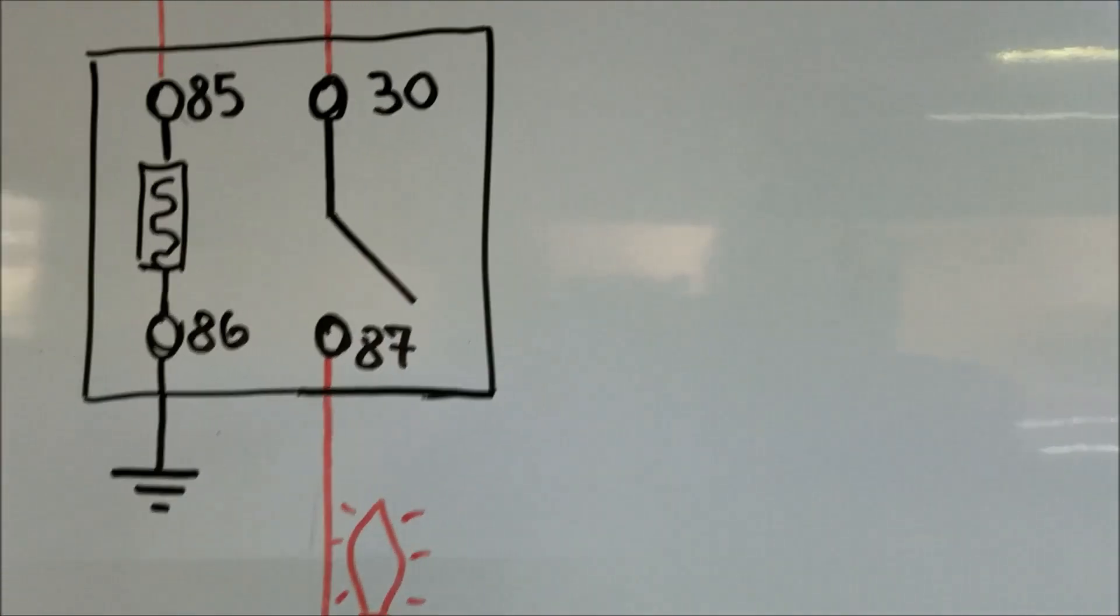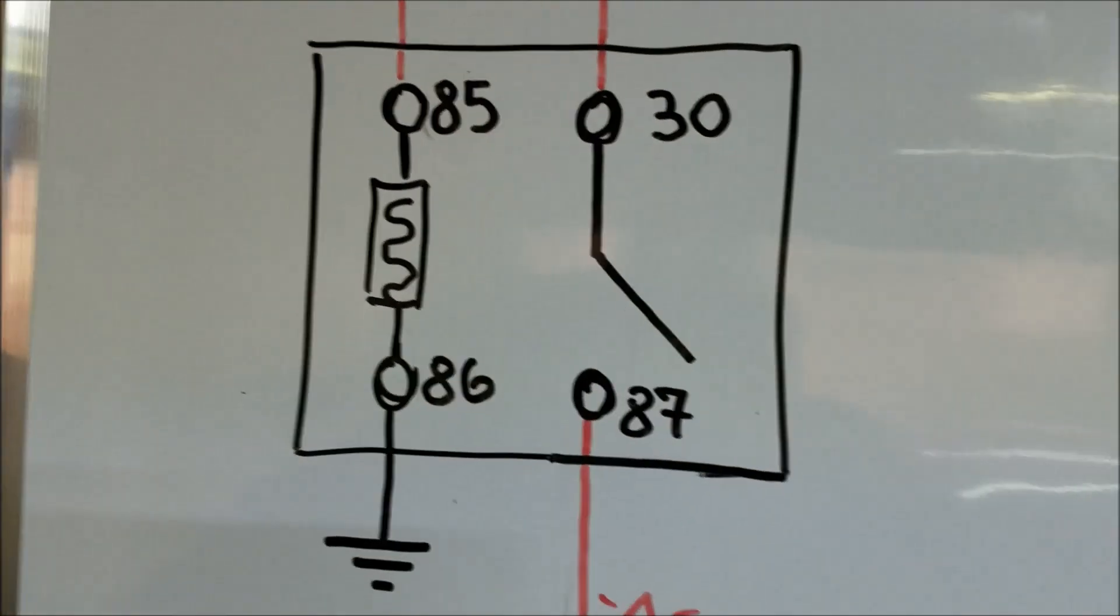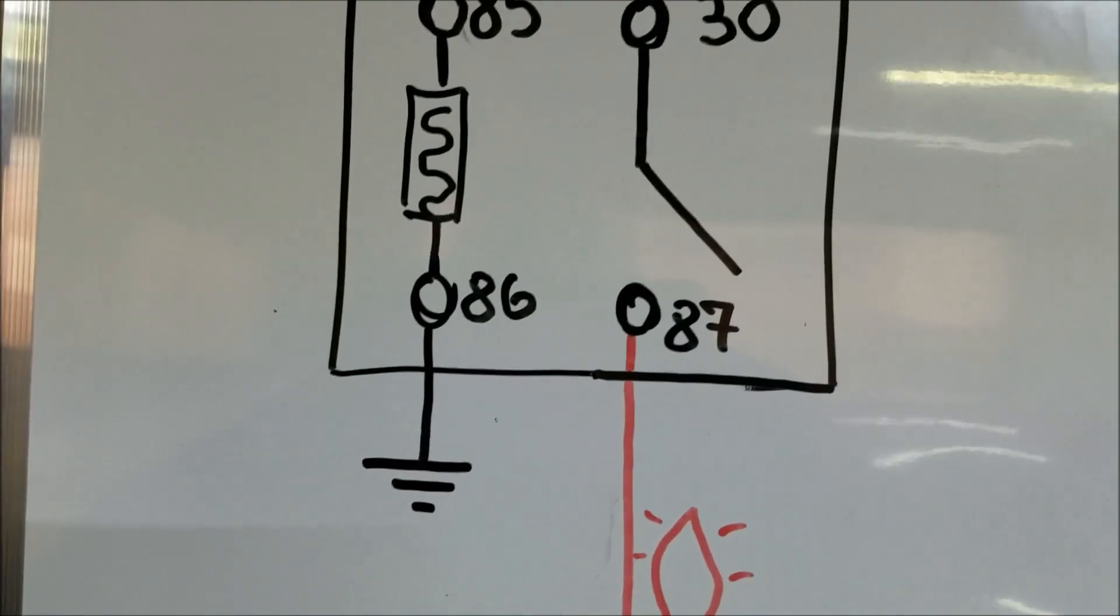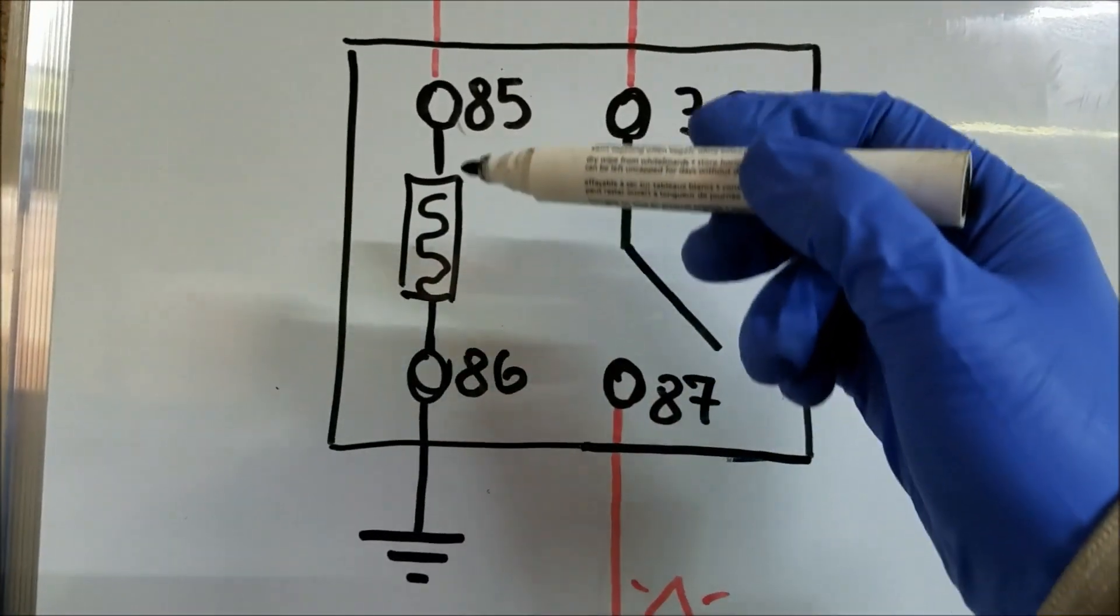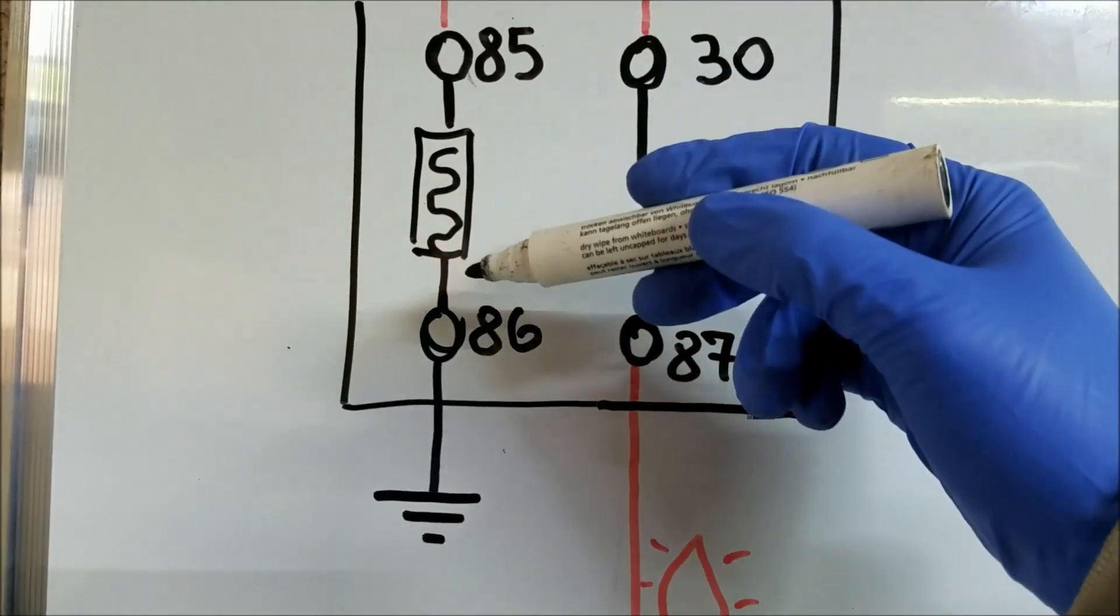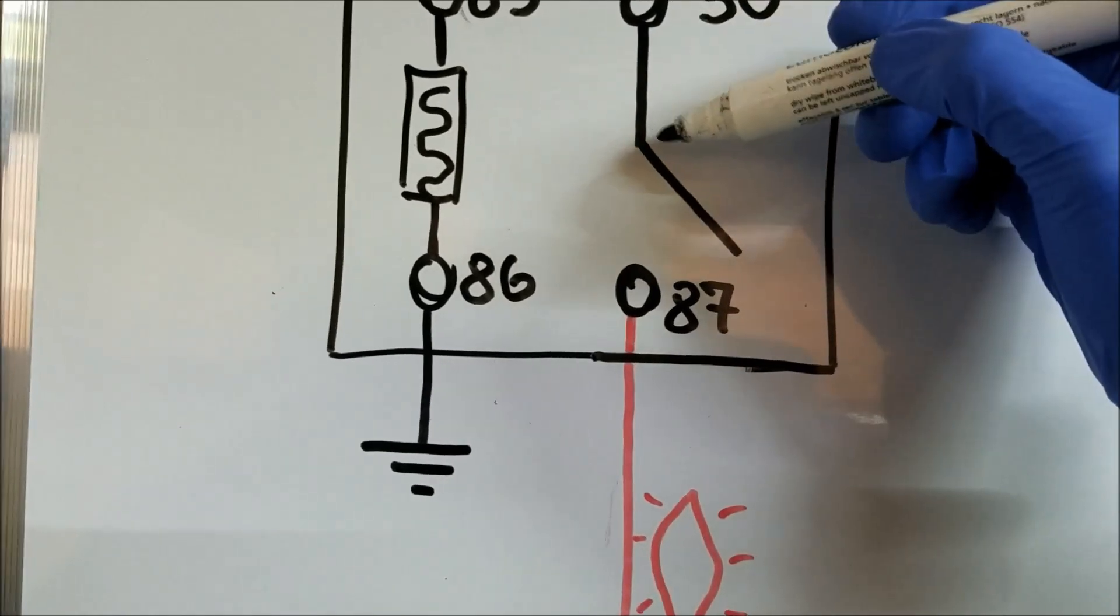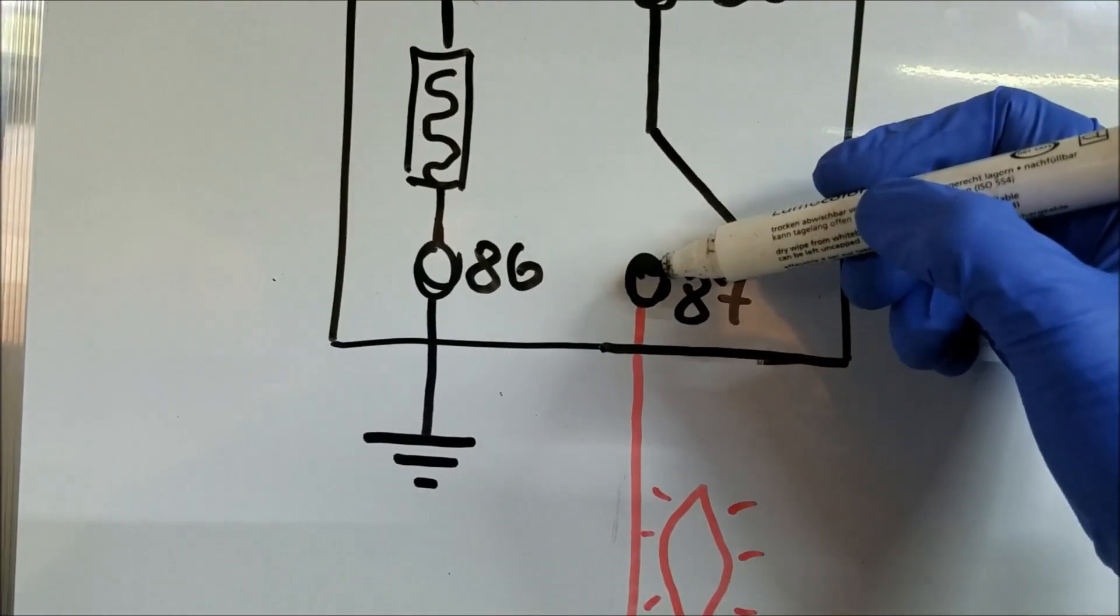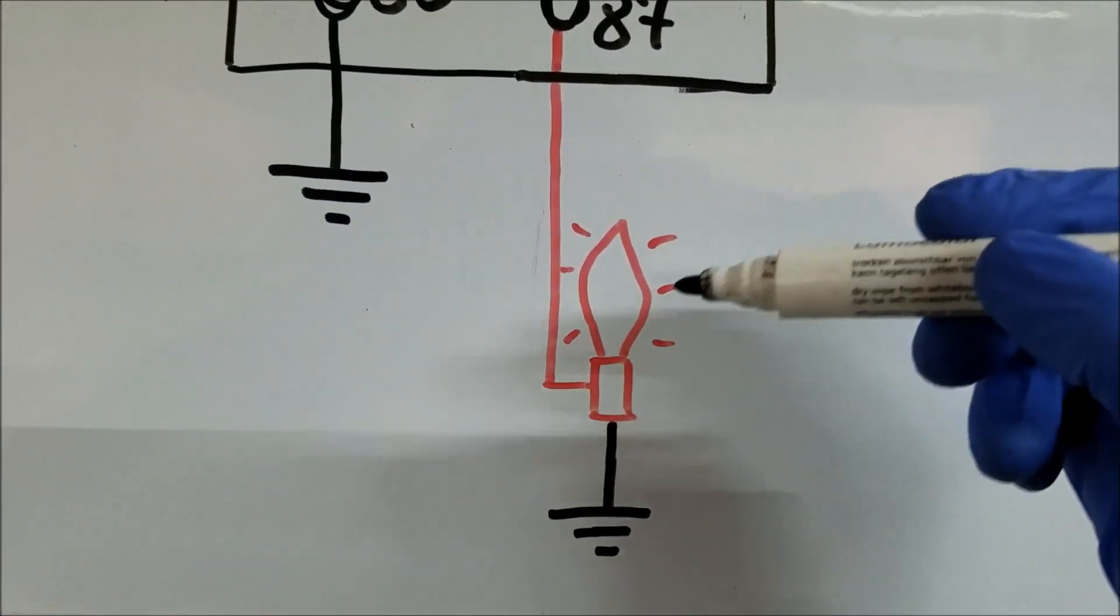As you might already know, car relays use electromagnets basically to close the high amperage switch, which then in return completes the loop and delivers the electricity to our high amperage component.